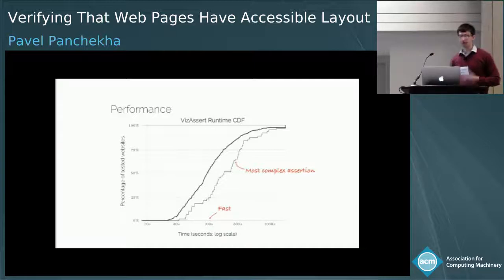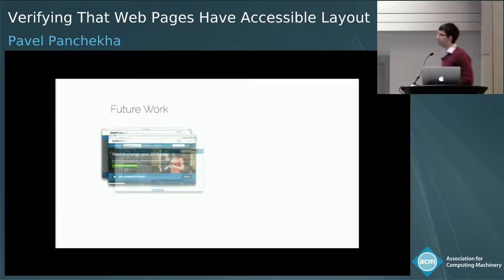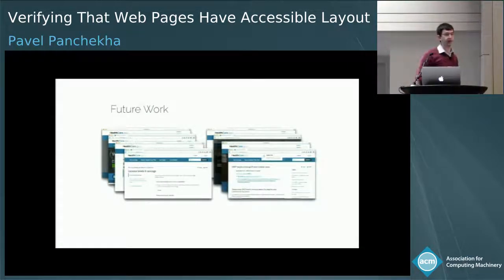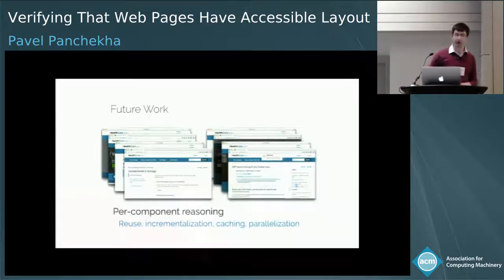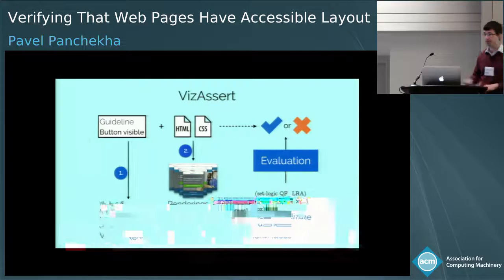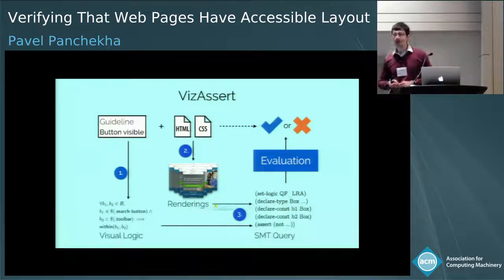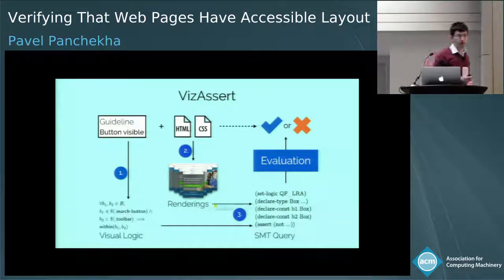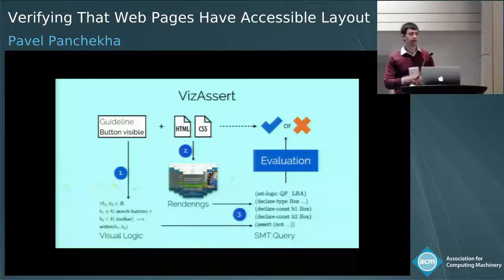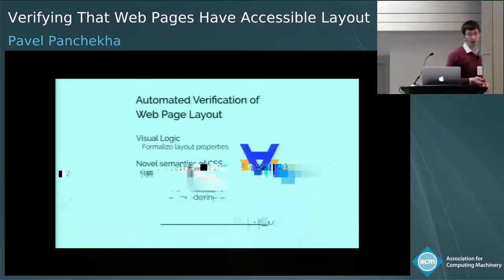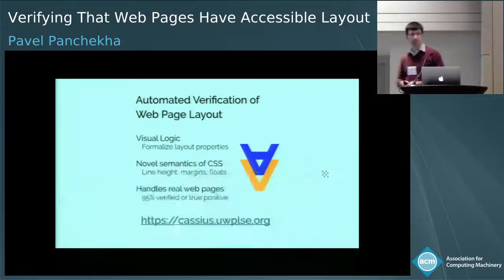We'd like to continue improving this. One area we're now working on is reused components that appear on many pages — for example, the header and footer on every healthcare.gov page is the same. If you have thousands of pages, the savings from not re-analyzing those components can be substantial. In summary, VisAssert works by formalizing accessibility guidelines into visual logic, computing the space of possible renderings using a CSS semantics with finitization reductions, and encoding the result to an SMT query solved by an off-the-shelf solver — giving us the first-ever automatic verification tool for web page layout properties.